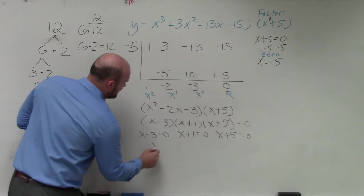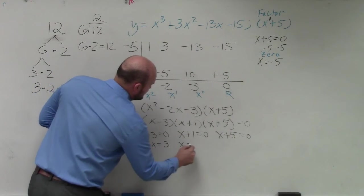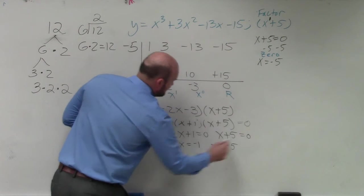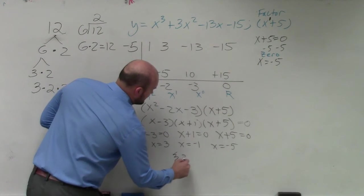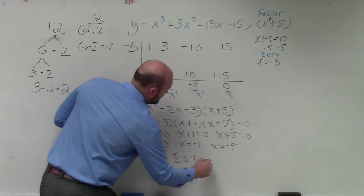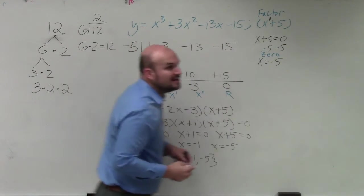Therefore, you have x equals 3, x equals negative 1, and x equals negative 5. So your solution set would be 3, negative 1, negative 5. That's all the zeros.